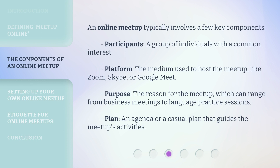An online meetup typically involves a few key components. Participants: a group of individuals with a common interest. Platform: the medium used to host the meetup, like Zoom, Skype, or Google Meet. Purpose: the reason for the meetup, which can range from business meetings to language practice sessions. Plan: an agenda or a casual plan that guides the meetup's activities.